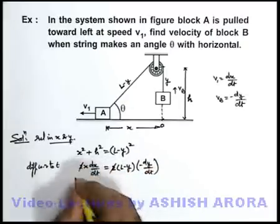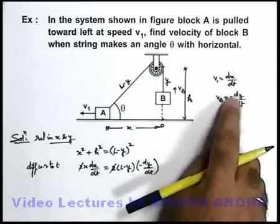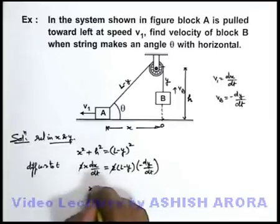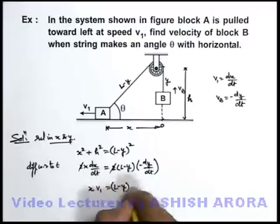This 2 gets cancelled out, and you can see that dx/dt I can write as v1, and -dy/dt I can write as vB. So here it becomes x · v1 = (L - y) · vB.